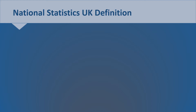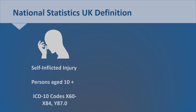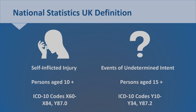Suicide statistics in Northern Ireland, England, Wales and Scotland follow the same national statistics definition. That is, deaths of self-affected injury of persons aged 10 and over with ICD-10 codes X60 to X84 and Y87.0. It also includes events of undetermined intent of persons aged 15 and over with ICD-10 codes Y10 to Y34 and Y87.2.